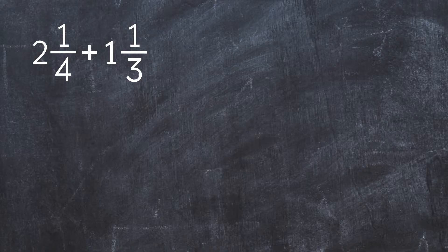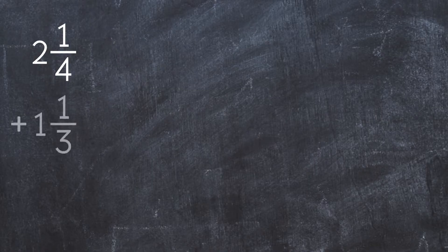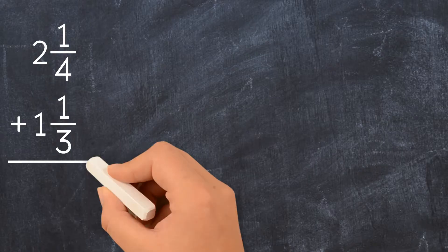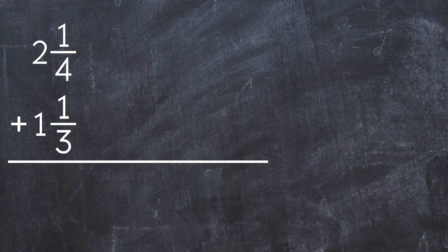Let's set this problem vertically. We line up the fractions and the whole numbers — this is called stacked form. To find the sum of mixed numbers with unlike denominators, we have to find the common denominator.